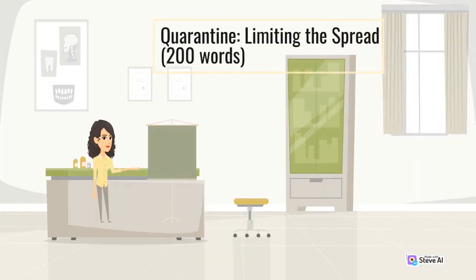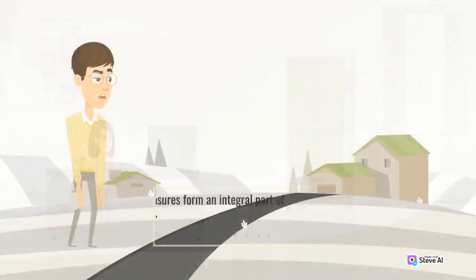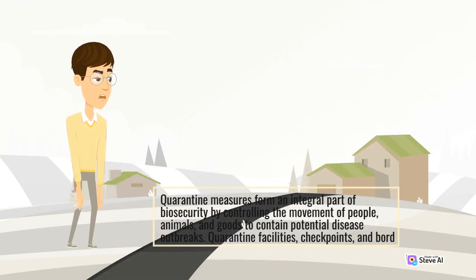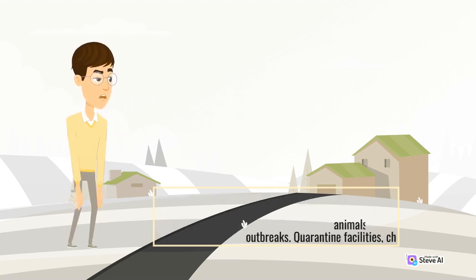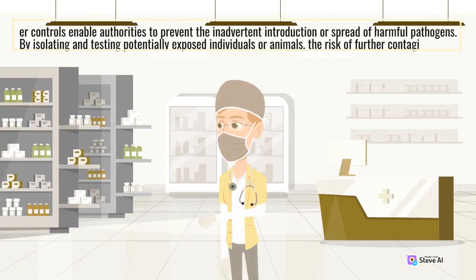Quarantine: limiting the spread. Quarantine measures form an integral part of biosecurity by controlling the movement of people, animals, and goods to contain potential disease outbreaks. Quarantine facilities, checkpoints, and border controls enable authorities to prevent the inadvertent introduction or spread of harmful pathogens.